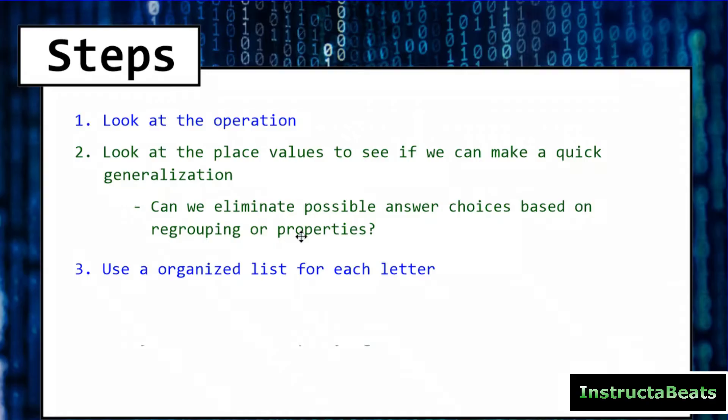Step number three, after you eliminate some of the answer choices for each letter, we want to make an organized list for each letter with the remaining digits that it can be. Step number four, we're going to plug in an option to see if it works. We might have to guess and check. And if it doesn't work, we're going to cross it off our list and we're going to keep trying.